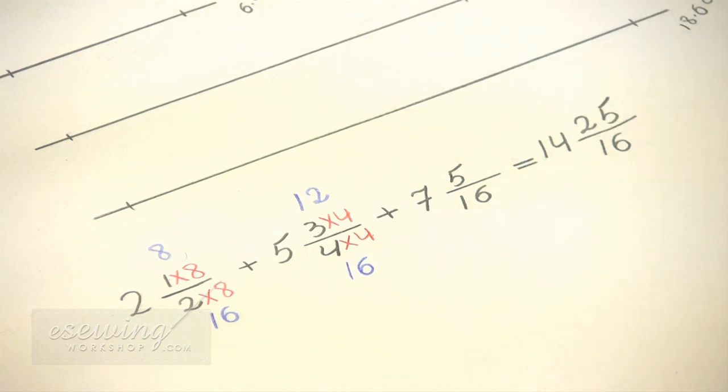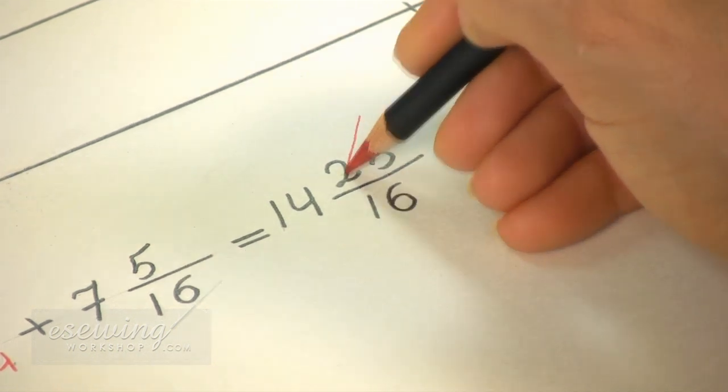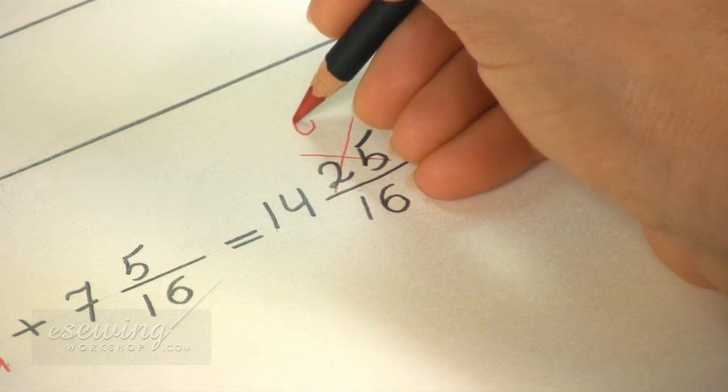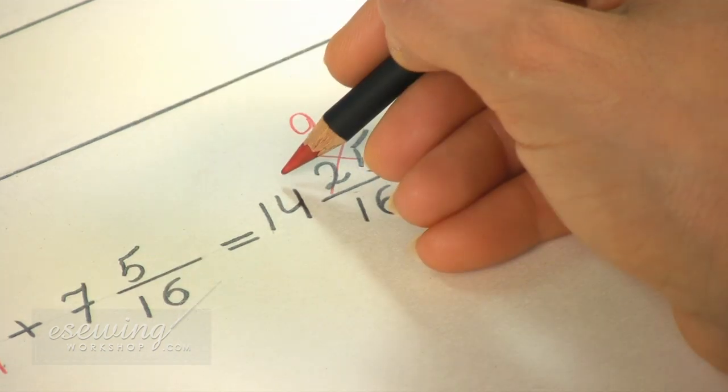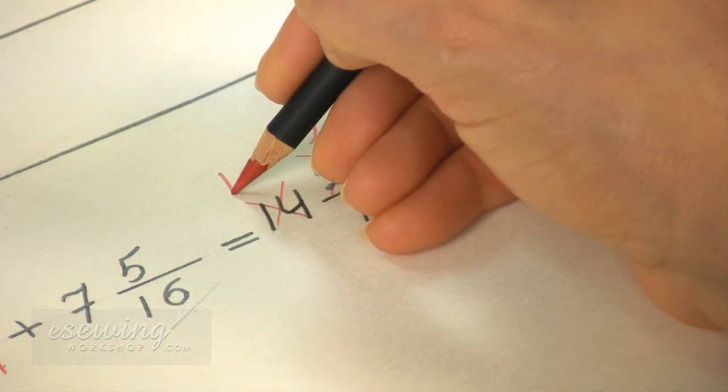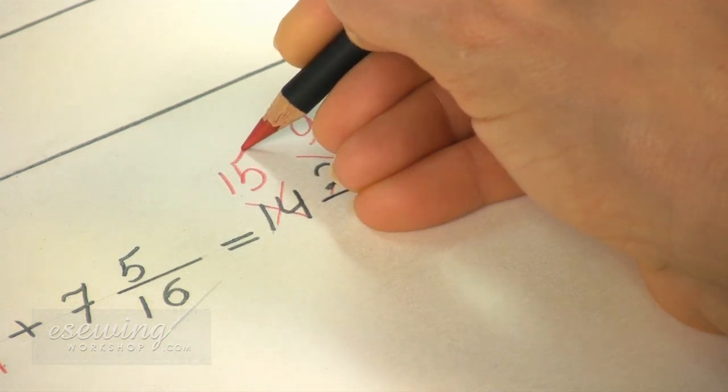25 over 16 is an improper fraction. Because the numerator is larger than the denominator. To correct the fraction we subtract the denominator from the numerator. 25 minus 16 is 9. We cross out 25 and write 9 above it. Next we add 1 to our whole number. 14 plus 1 is 15. Cross out 14 and write 15 above it.